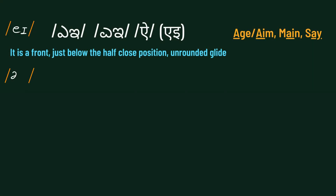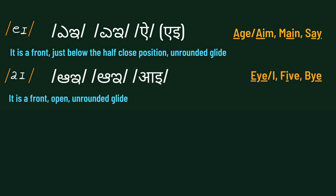The second diphthong is /aɪ/. It is a front open and rounded glide. Examples are: I, five, by.